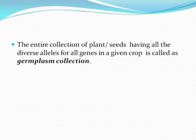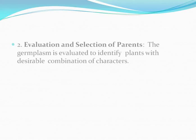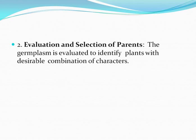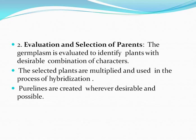The entire collection of plants or seeds having all the diverse alleles for all genes in a given crop is called germplasm collection. Germplasm collection is the most practical and effective answer to the problem of germplasm loss due to expansion of agriculture, industries, and other human activities. Evaluation and selection of parents: the germplasm is evaluated to identify plants with desirable combinations of characters. The selected plants are multiplied and used in hybridization, and pure lines are created wherever desirable and possible.